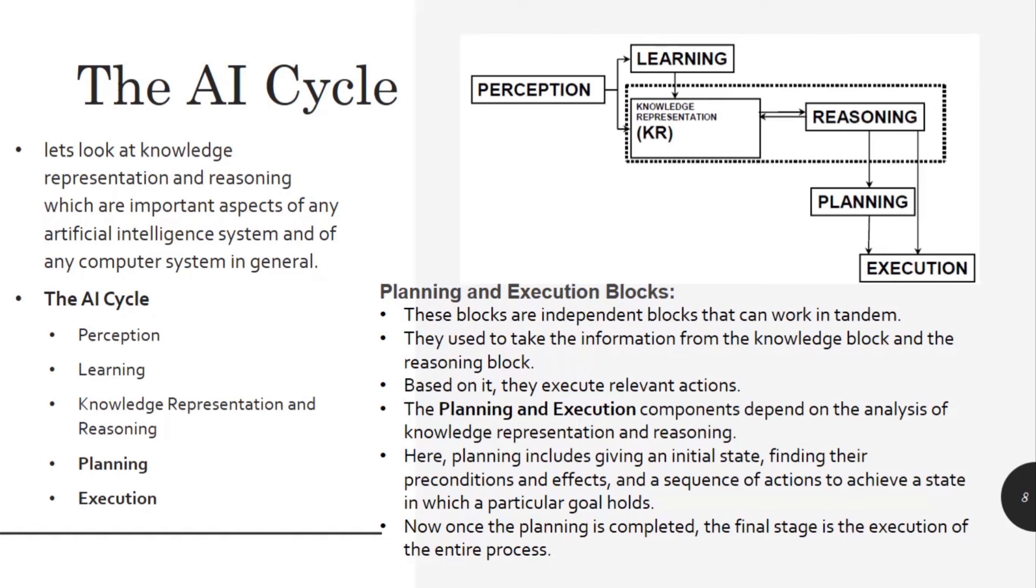Here planning includes giving an initial state, finding their preconditions and effects, and sequences of actions to achieve the state in which a particular goal holds. Once the planning is completed, the final stage is the execution of the entire process. Now the whole cycle will be executed.